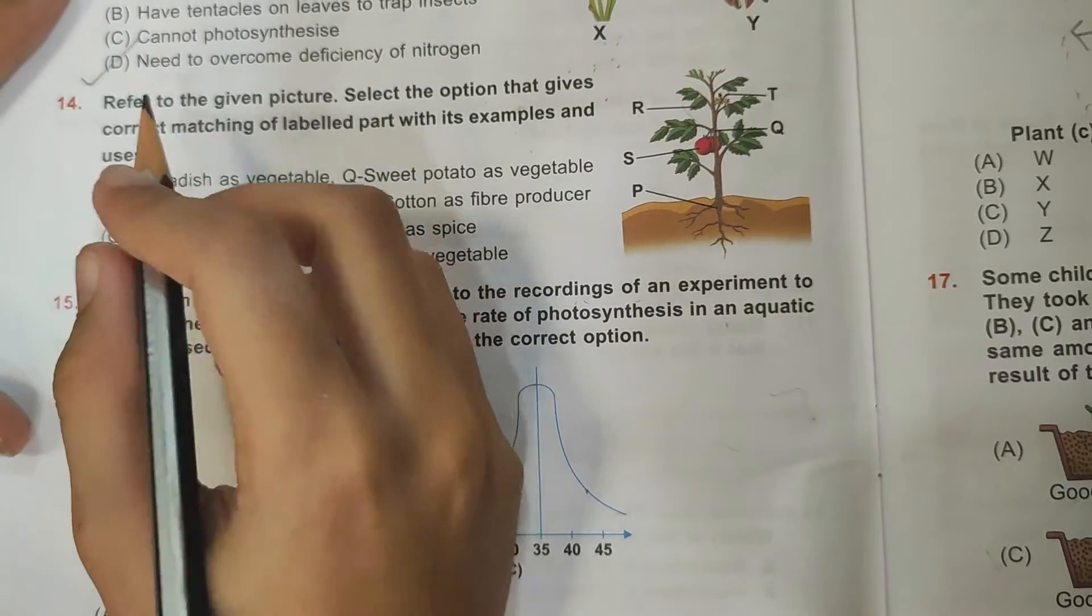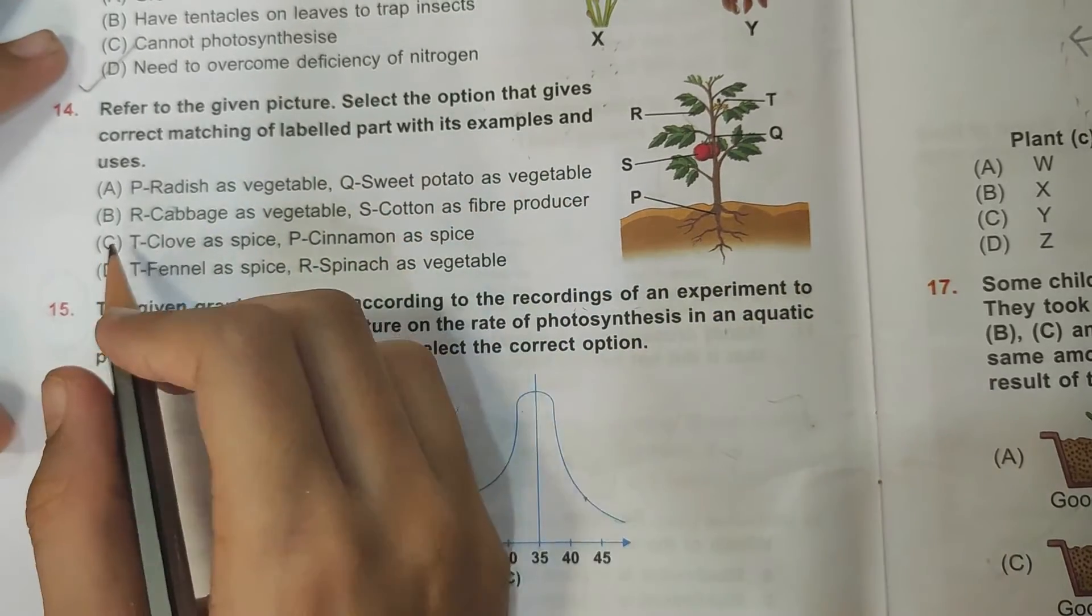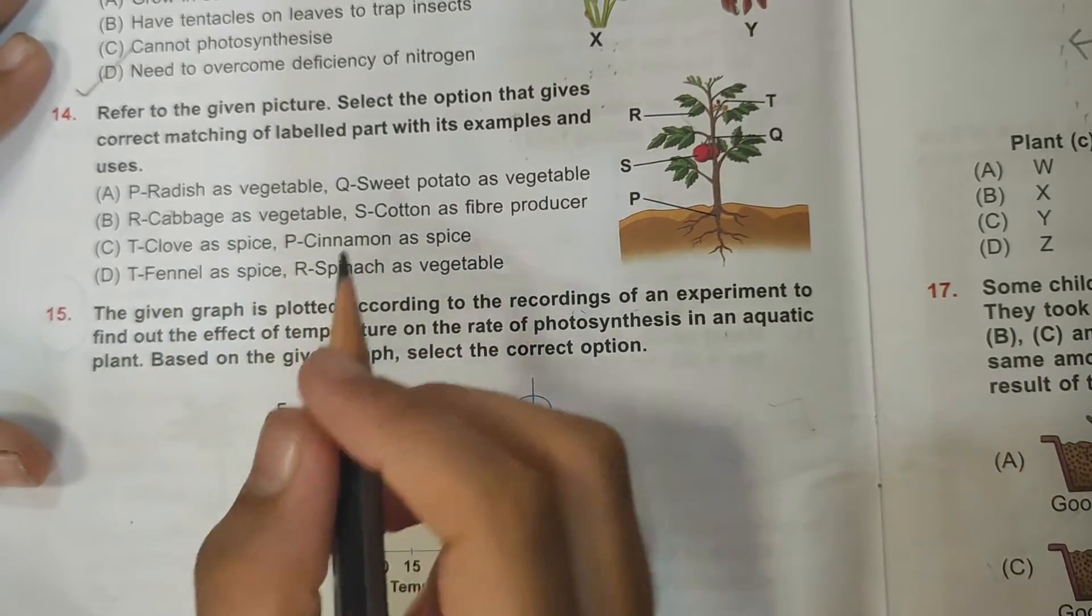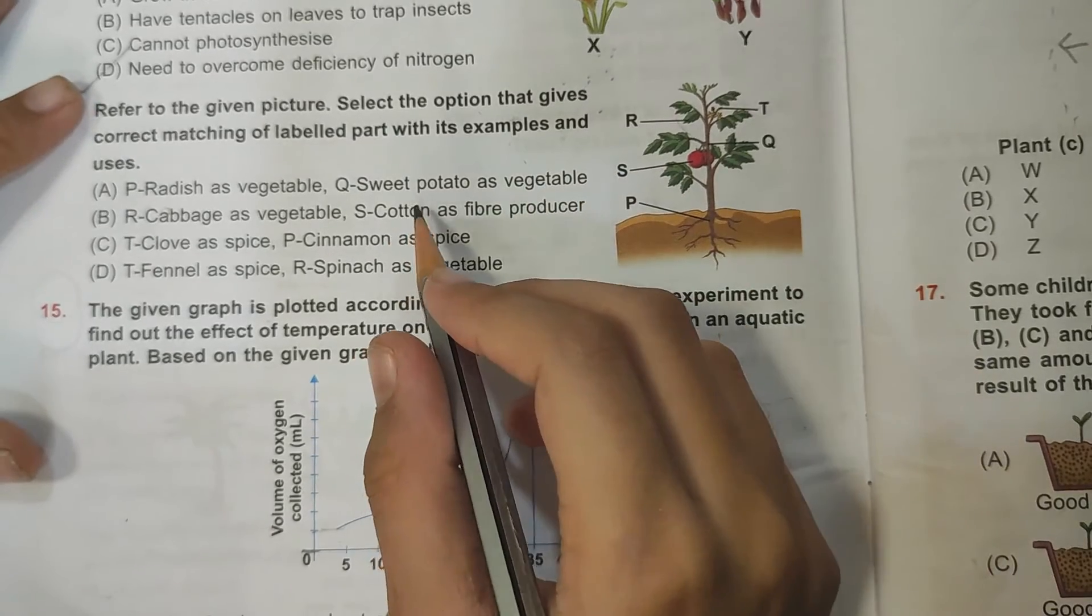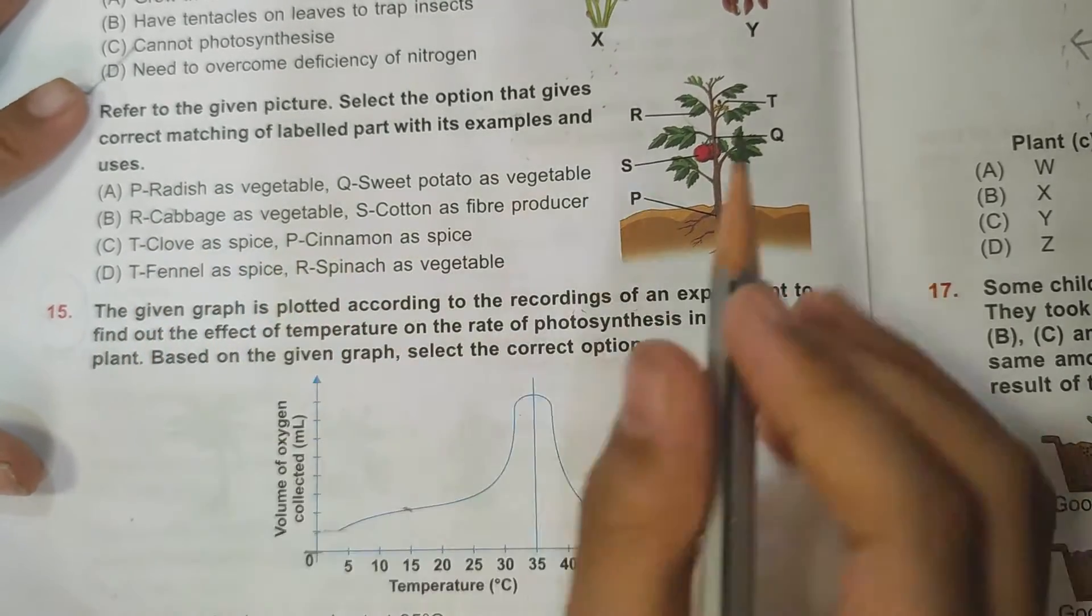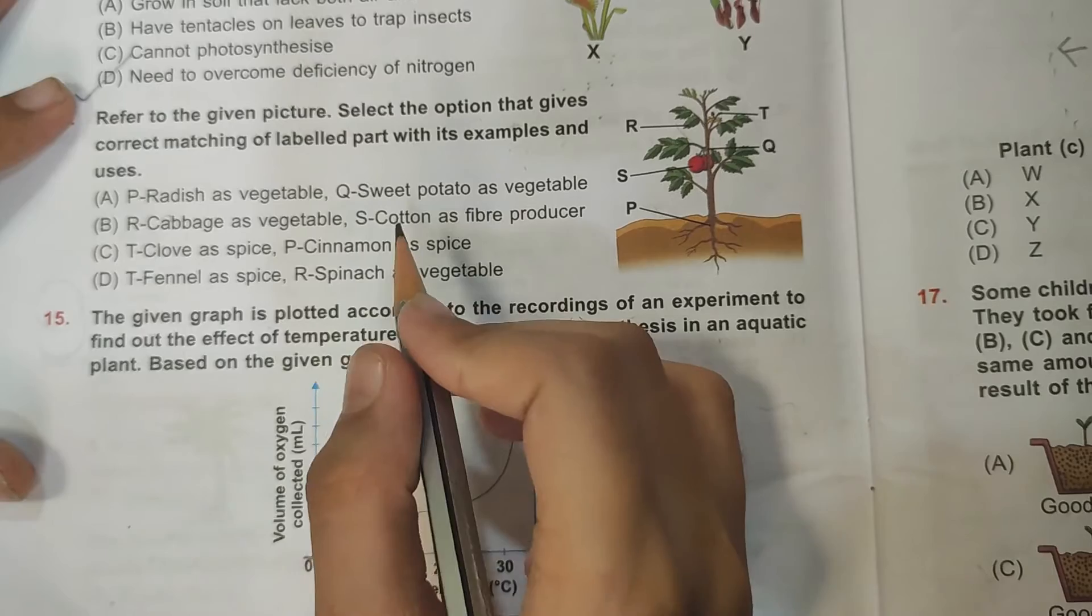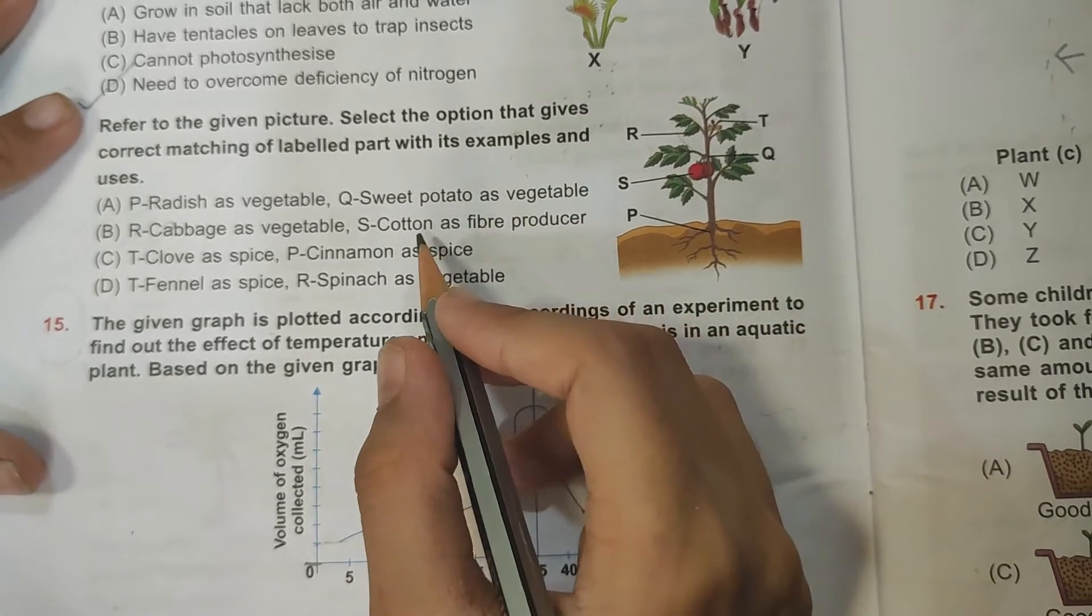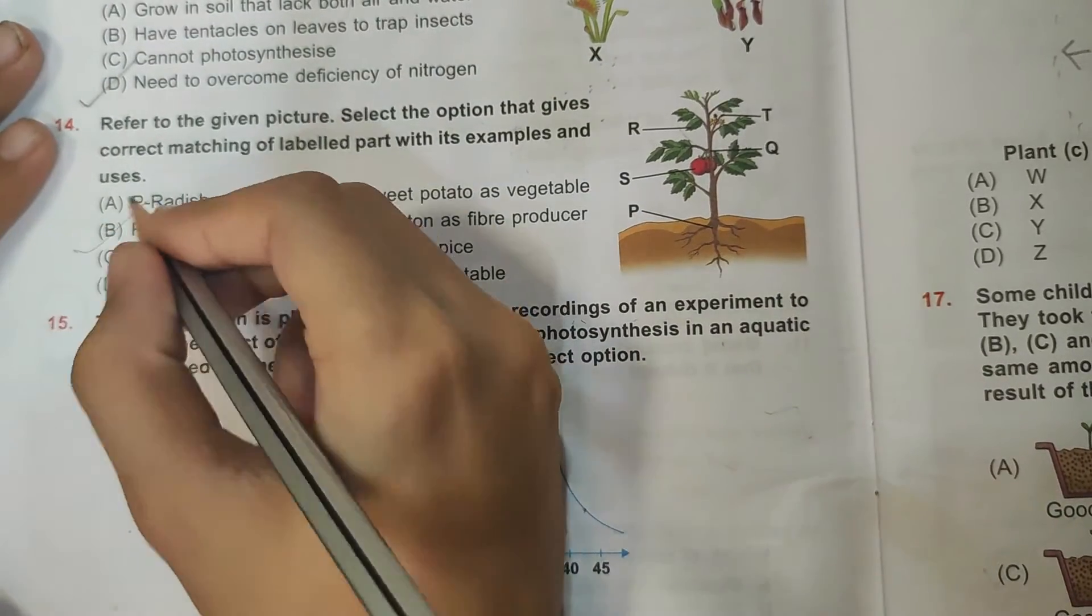Fourteenth question: refer to the given picture. Select the option that gives correct matching of the labeled part with its example and use. P: radish as vegetable - P is a root and we eat root of radish as vegetable. Q: sweet potato as vegetable - Q is a stem and we eat root of sweet potato as vegetable, so that is false. R: cabbage as vegetable - R is a leaf and we eat leaves of cabbage as vegetable. S: cotton as fiber producer - S is a fruit and from the fruit of cotton we produce fiber. So B is the correct answer.